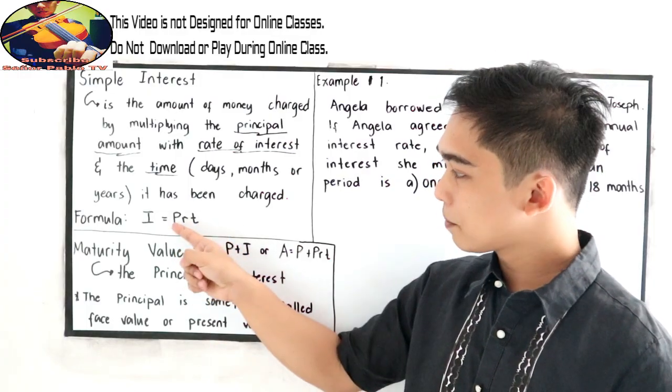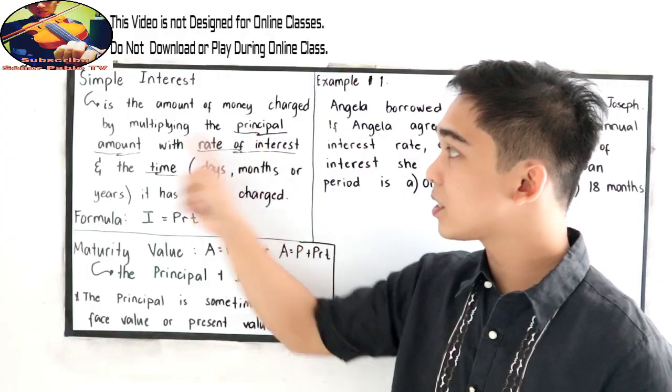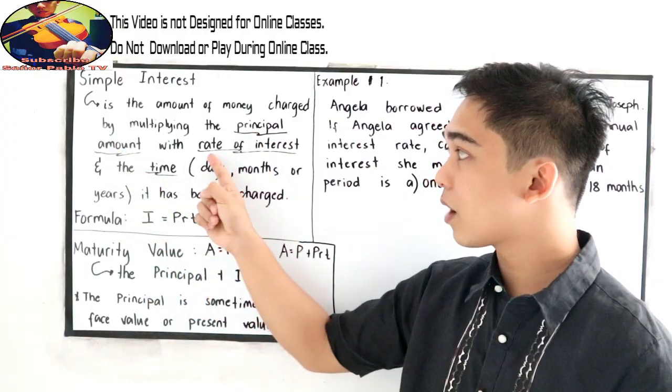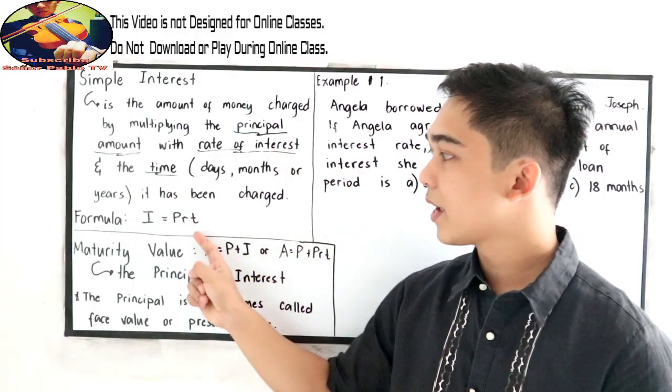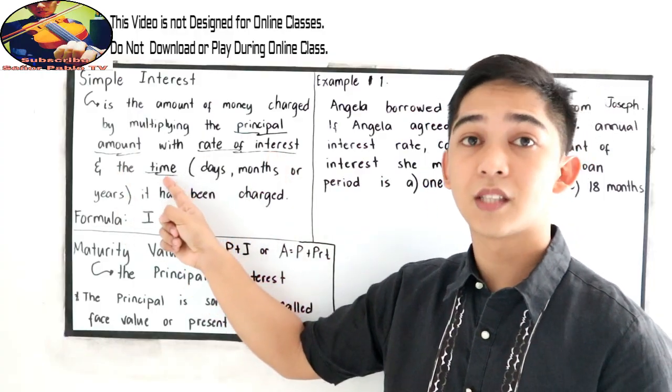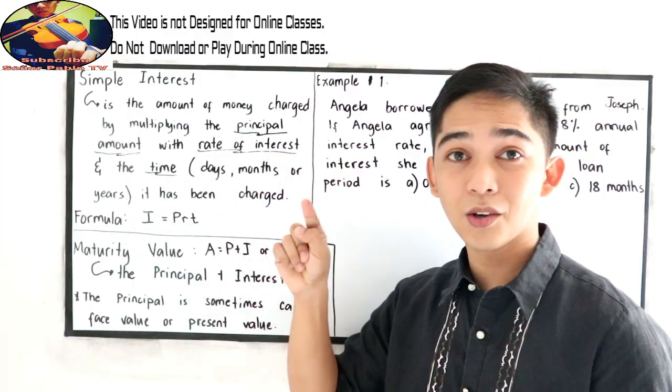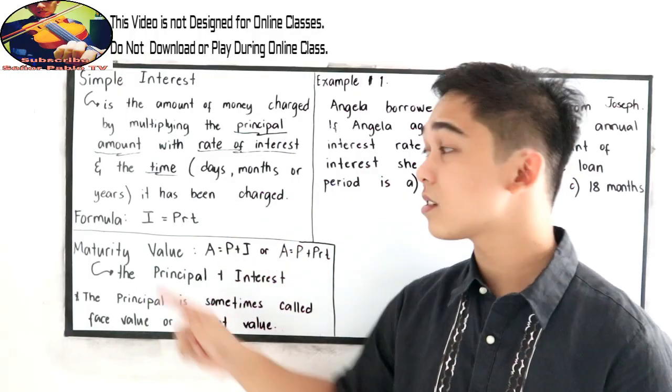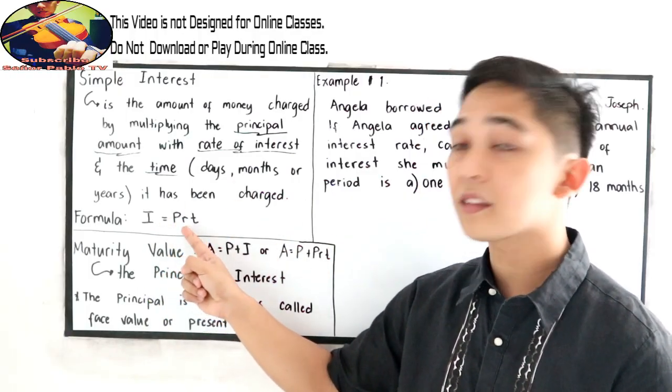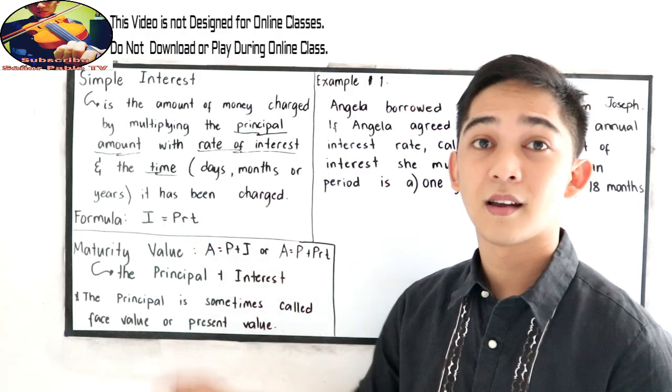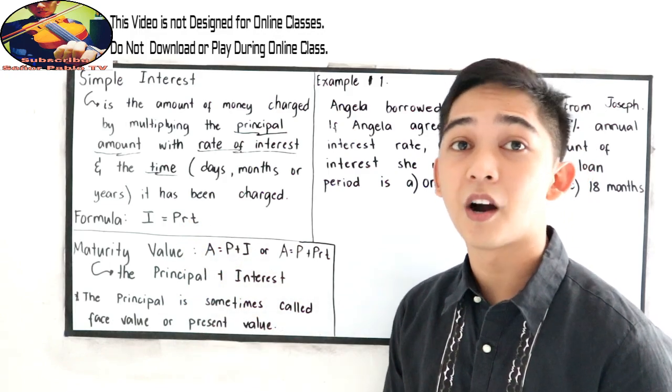Wherein P is our principal amount, R is our rate of interest, and T is our time. So take note, I, or interest, is equal to P times R times T.